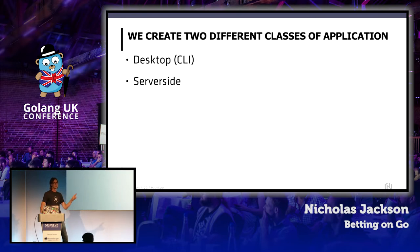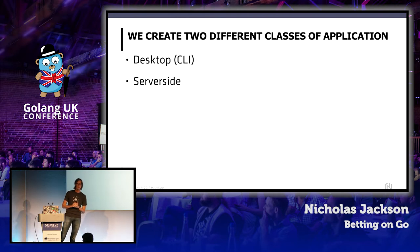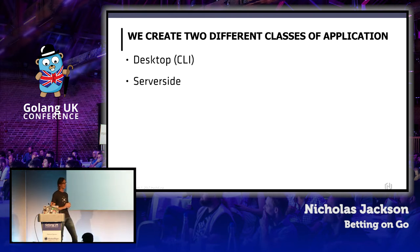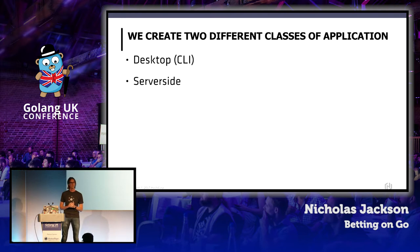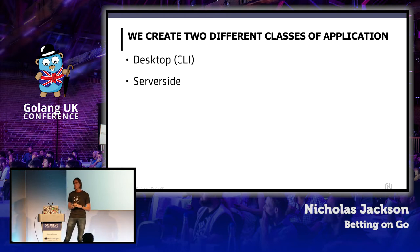We do two different types of application. We do desktop applications — when I say desktop, we build CLIs. And we do server-side applications — highly distributed server-side applications, things that are capable of running tens and tens of thousands of nodes.